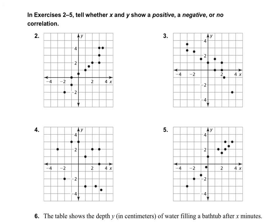On the next page, it says, in exercises 2, 3, 5, tell whether X and Y show a positive, a negative, or no correlation. So on number 2, you'll notice that the points are headed up and to the right. So this would be a positive correlation. I would like for you to answer questions 3, 4, and 5. Decide whether it is a positive, a negative, or no correlation.